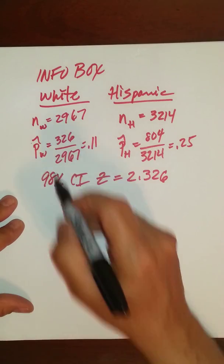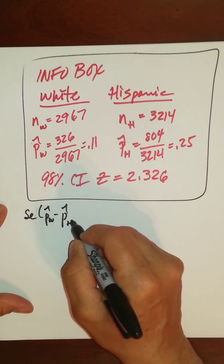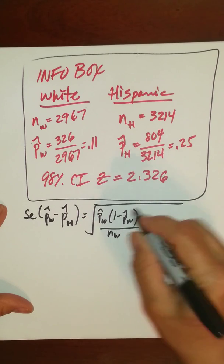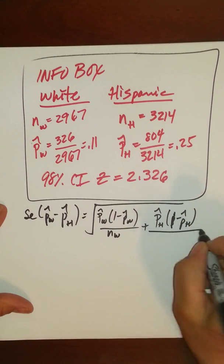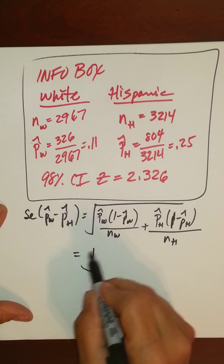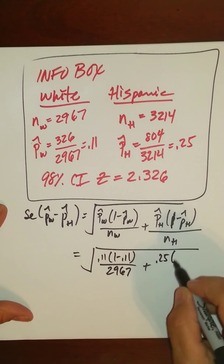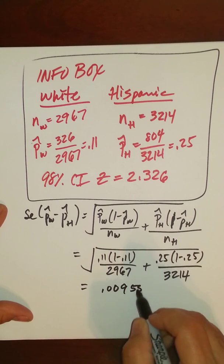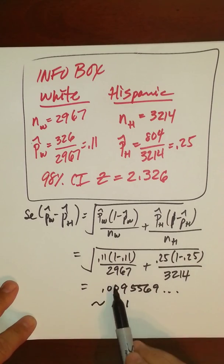We need to find our standard error. The standard error of p-hat_W minus p-hat_H is the square root of: p-hat_W times (1 minus p-hat_W) over n_W, plus p-hat_H times (1 minus p-hat_H) over n_H. Filling in: 0.11 times 0.89 over 2,967, plus 0.25 times 0.75 over 3,214. You should get approximately 0.0095569. We'll round to 0.01.